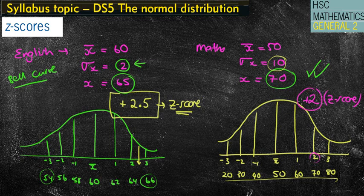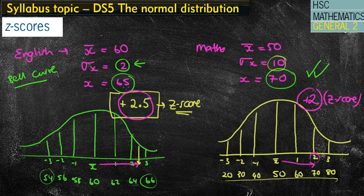See how in maths it's 2 standard deviations above the mean, but in English we're actually 2.5 standard deviations above the mean, which means we're actually further above the mean in English. So at face value, the maths mark looked better. However, in the grand scheme of things, it actually turned out that the English mark was better because it was further above the mean. This brings us to the fact that with Z-scores, the bigger the Z-score, the better the mark.